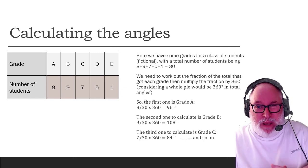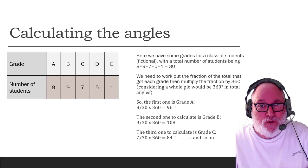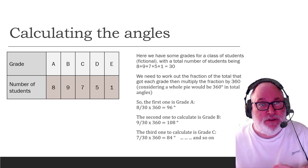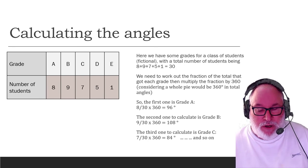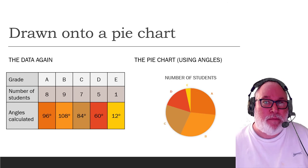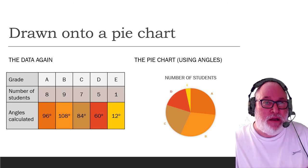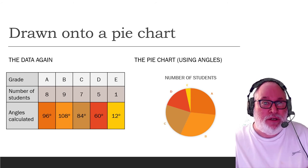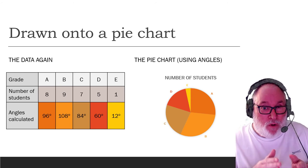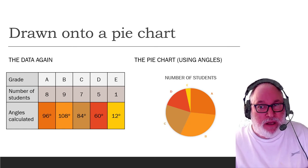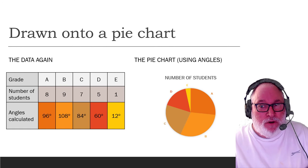So if you make a note of them. Grade A was 8 out of 30 multiplied by 360, makes 96 degrees. So if we were to do that for the whole of our chart, we get Grade A is 96 degrees, B 108 degrees, C 84 degrees. So I've done it for them all. Then I've plotted them onto a chart and I've made sure I've got the angles correct.